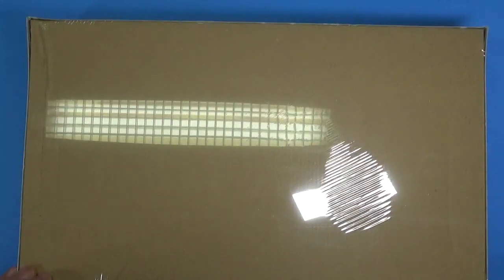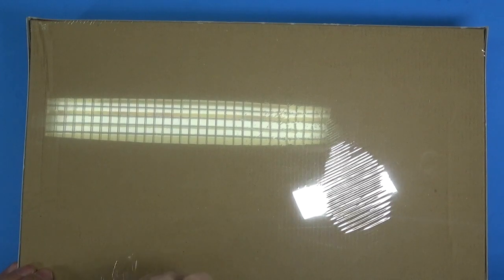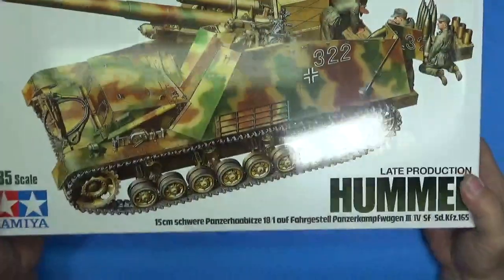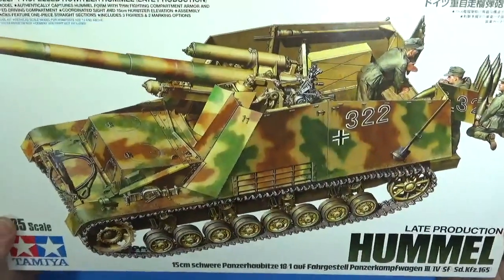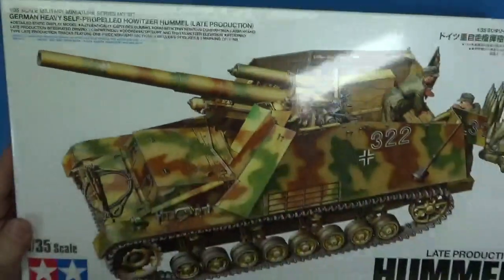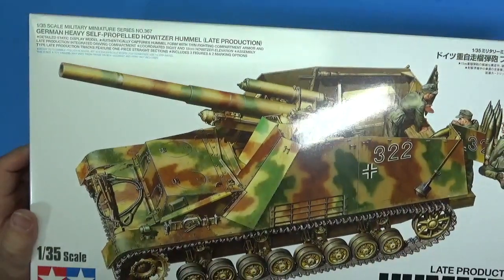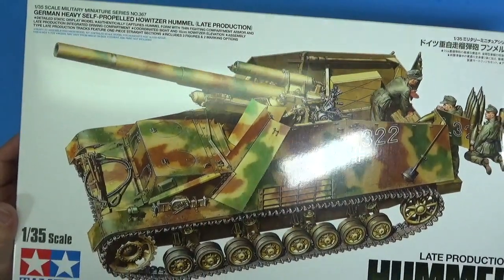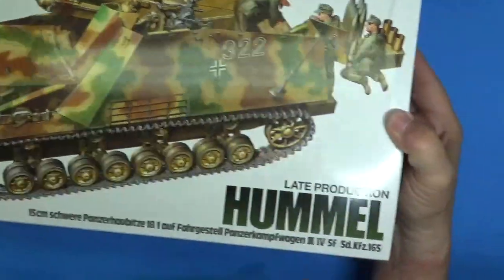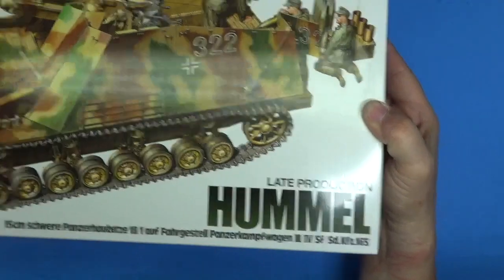So let's cut off some of this shrink wrap. For all you armor enthusiasts, kit number is Miniature series number 367. German heavy self-propelled howitzer Hummel, late production. 15 centimeter, SD KFZ 165. That I can read.